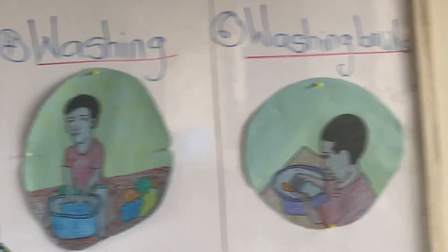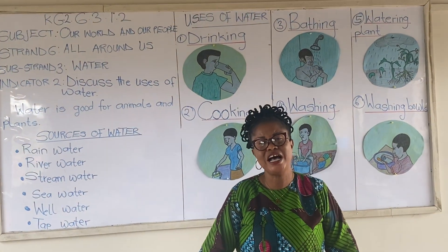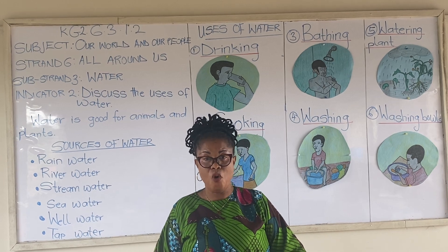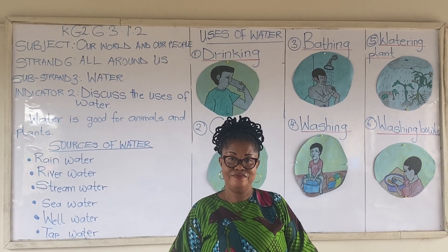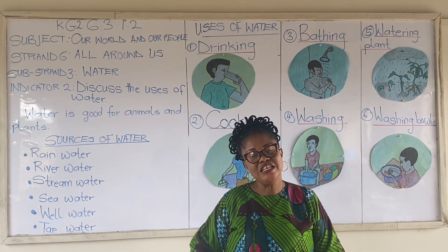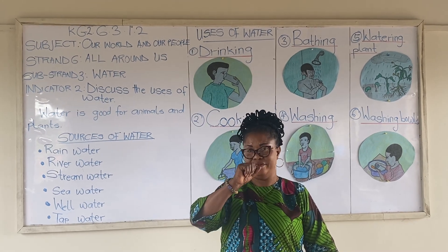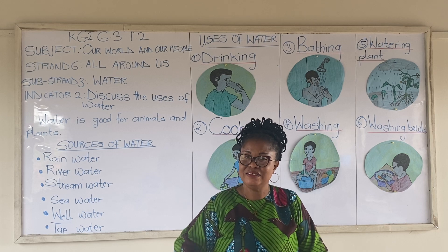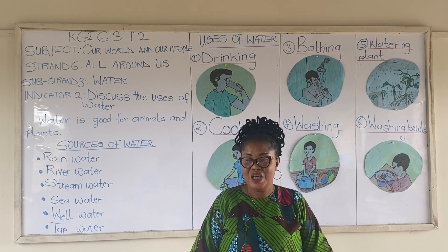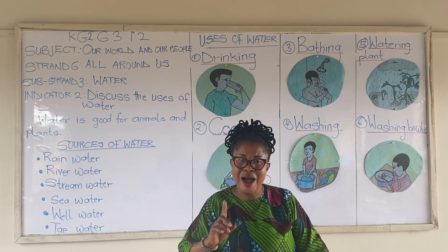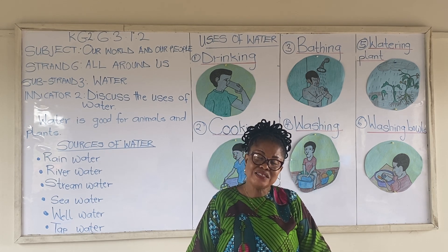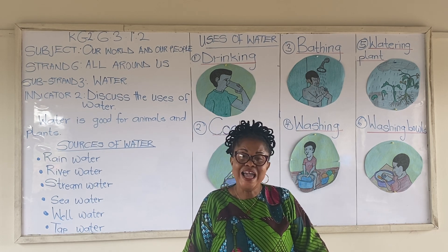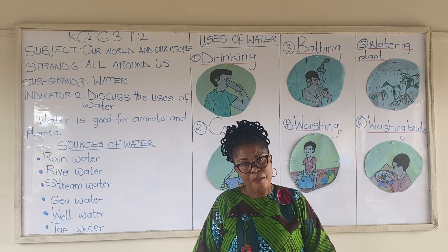So children, from what we just discussed, can you mention some uses of water? Water is used for drinking. Water is used for cooking. Water is used for bathing. Water is used for washing bowls. Water is used for watering plants.